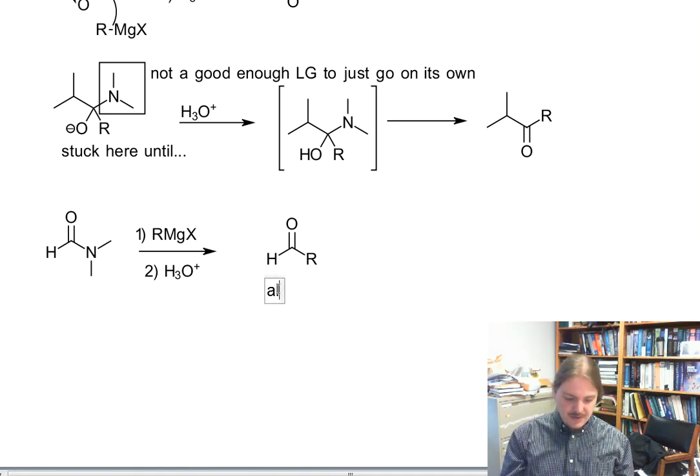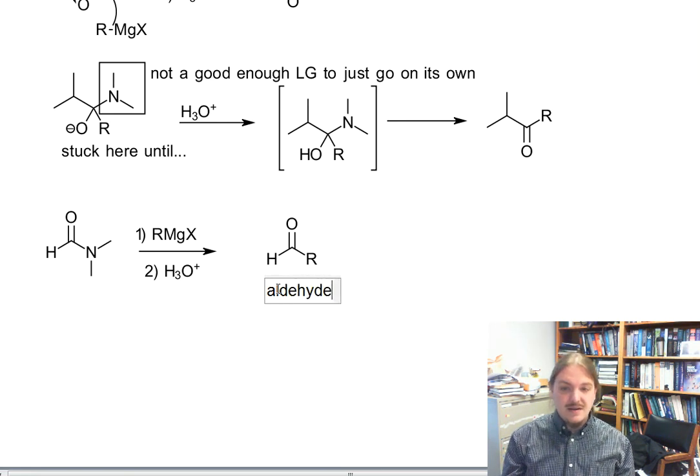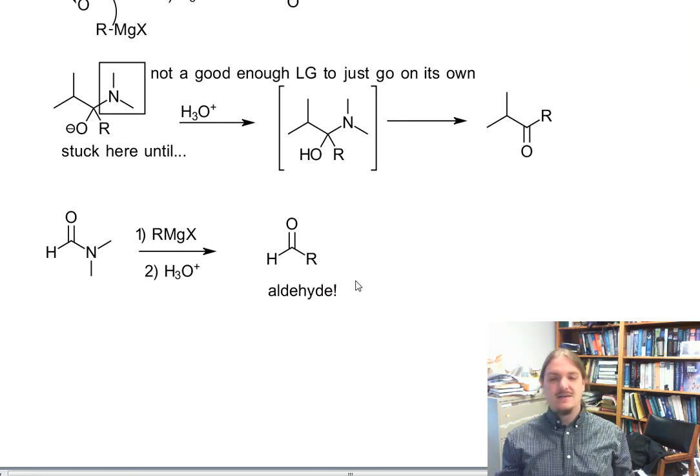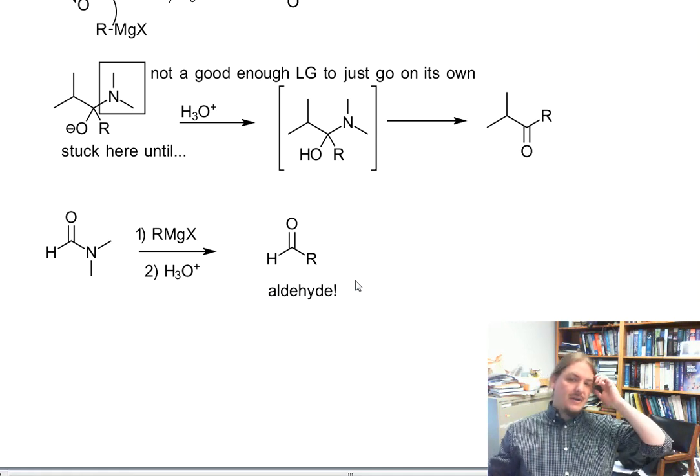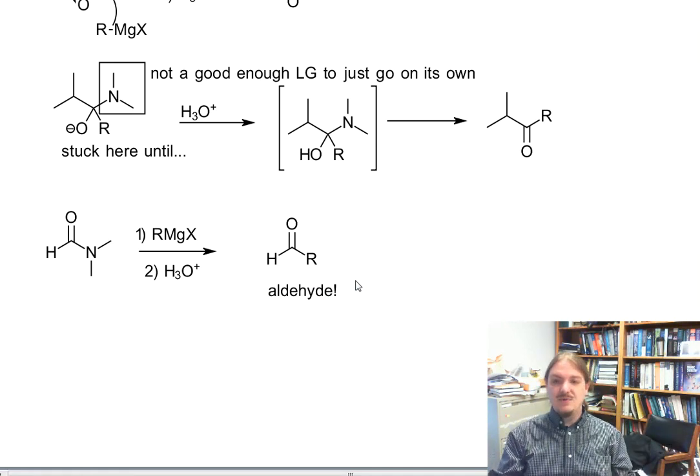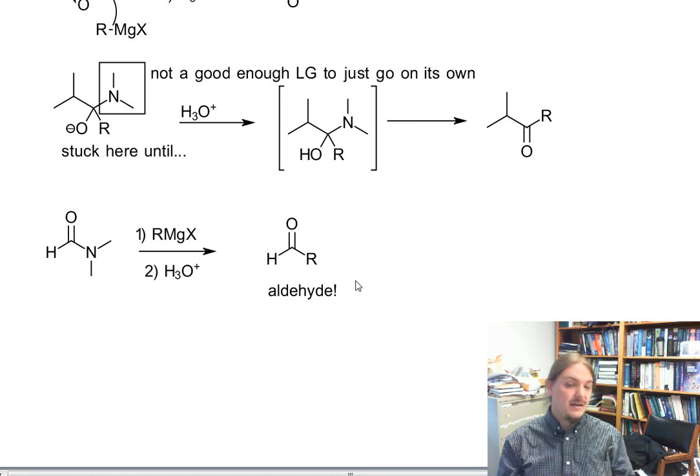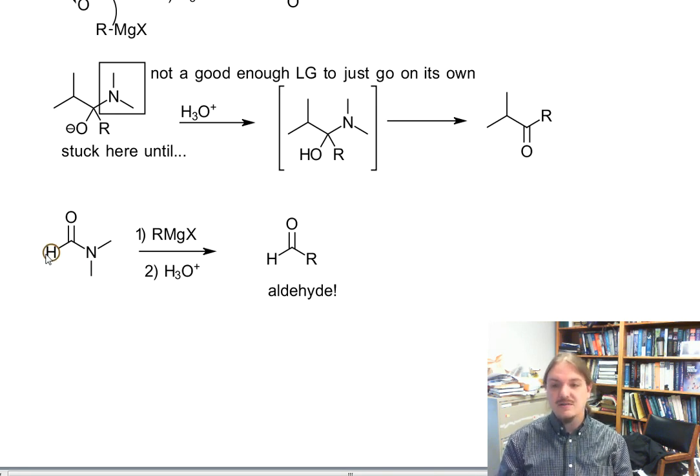Even though in the previous video I shared that nitriles can't be converted to aldehydes by lithium aluminum hydride - they can by diisobutyl aluminum hydride - here's an interesting way to generate an aldehyde from a tertiary amide using a Grignard reagent. If you've been wondering how you might make aldehydes using Grignard reagents, here it is using dialkyl formamides. Resist the urge to consider the aldehyde hydrogen or the formyl hydrogen as acidic. It's not.